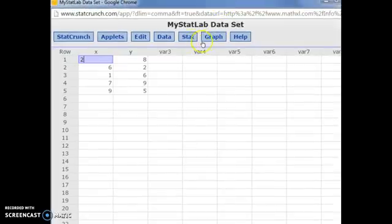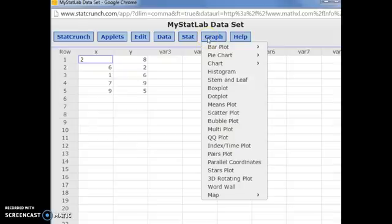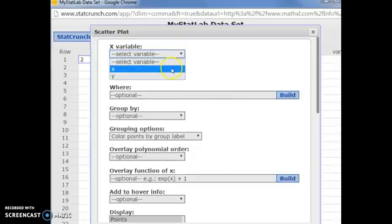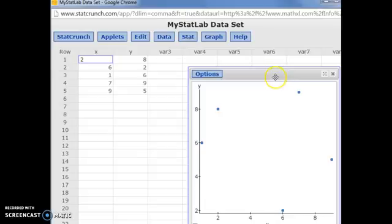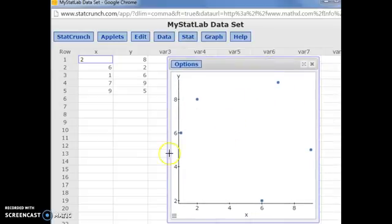If we open this in StatCrunch, we can get a scatter diagram, or you can graph one by hand if you have some graph paper. In StatCrunch, we want to do graph, scatter plot, X and Y. When you click compute, it will give you the scatter diagram.